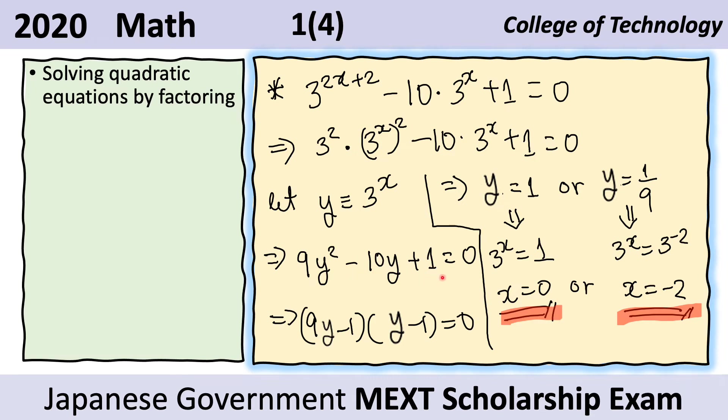We can now use factoring. This factors into 9y minus 1, and y minus 1 equals 0. Now we can find solutions to this. 9y minus 1 gives us the solution y equals 1/9, and y minus 1 gives us the solution y equals 1.